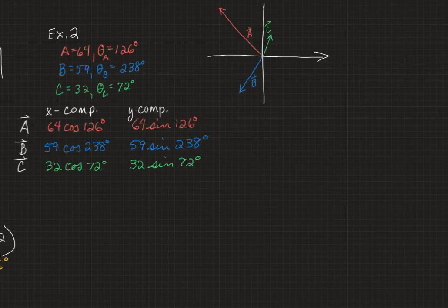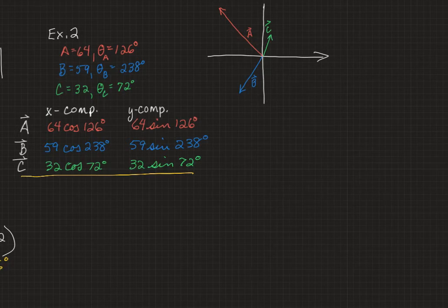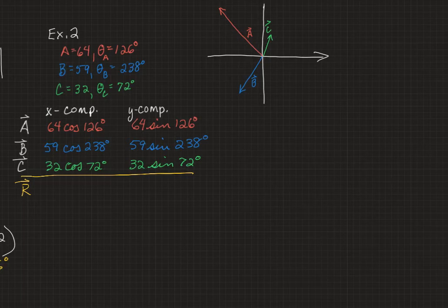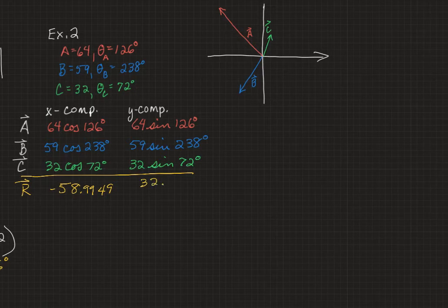And finally, let's look at an example in which there are three vectors to be added. Now, you may pause this video at any time to analyze what I've written here. But basically, I've gone ahead and drawn the vectors, drawn the chart, and shown you how to calculate the x and y components for each of those vectors. And when you add them all up, you should get a resultant vector. Let's call it R. And that's going to be approximately negative 58.9949 for an x component, and a positive y component of 32.17605 dot dot dot dot dot.